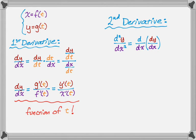So dy dx is actually a function of t, which means that we need to take the derivative of that with respect to t. So it's d dt of dy dx. And then, by the chain rule, we're going to need to multiply by dt dx.